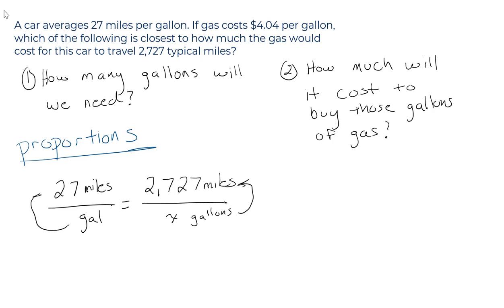Well, there are a couple ways we can find that. So these two ratios, 27 to 1 and 2,727 to x are exactly the same thing. That's why we have the equal sign. Proportion. Setting one ratio equal to another.